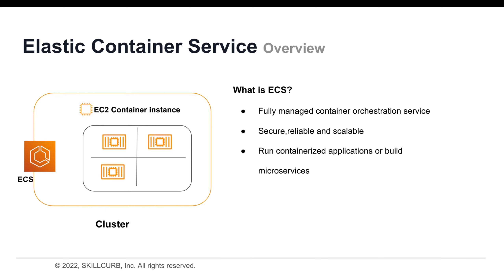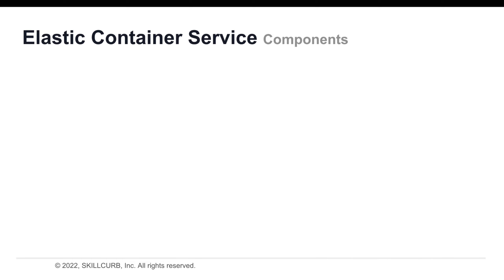Elastic Container Service, or ECS, is a fully managed container orchestration service that provides the most secure, reliable, and scalable way to run containerized applications. In Amazon ECS, your containers are defined in a task definition that you can use to run individual tasks, or tasks within a service. A service is a configuration that you can use to run and maintain a specified number of tasks simultaneously in a cluster.